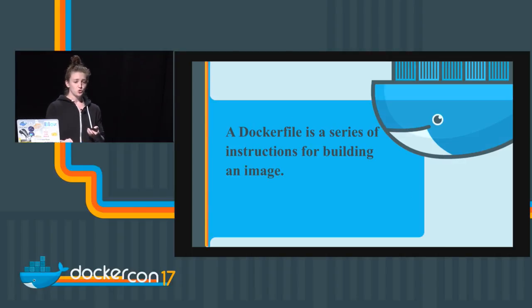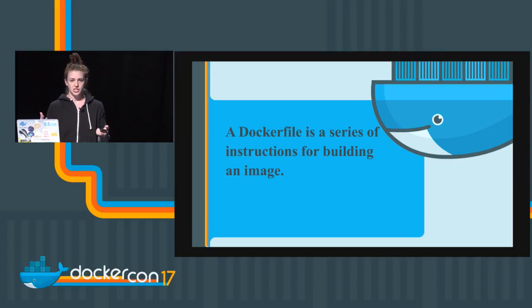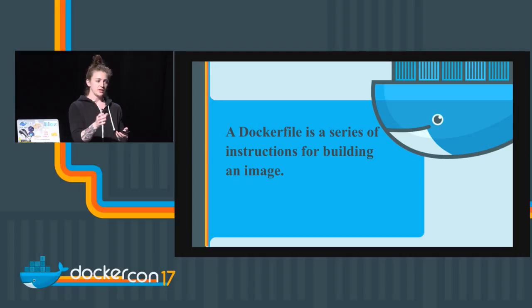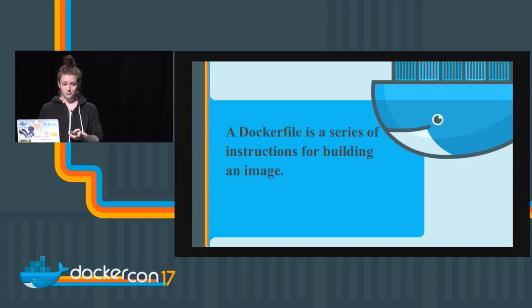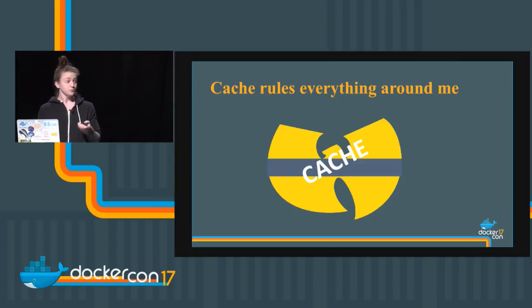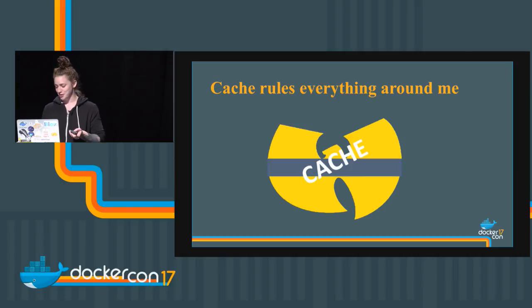Hopefully you know what a Dockerfile is. A Dockerfile is a series of instructions for building an image — something like 'FROM base image' or 'RUN command'. Cache rules everything around me — this is one of our most basic and important things. Anything that you can cache, you probably should, with some exceptions. If you're building every single time, think about all the things you do: updating packages, installing new packages, doing some configuration or setup that doesn't need to happen every time.